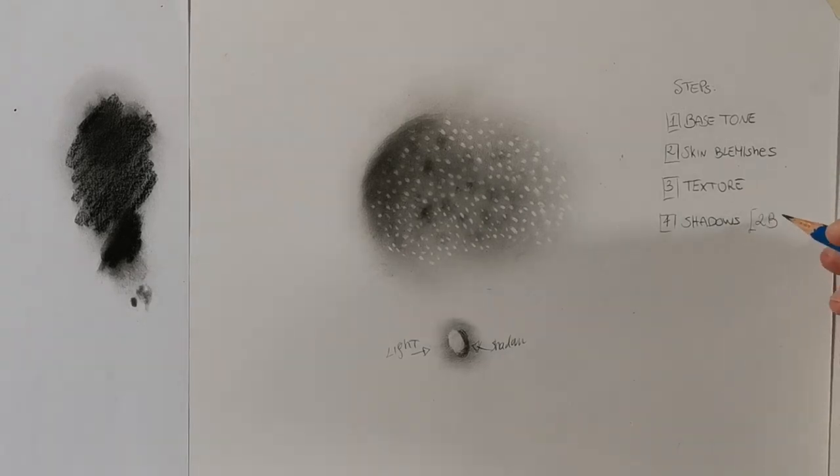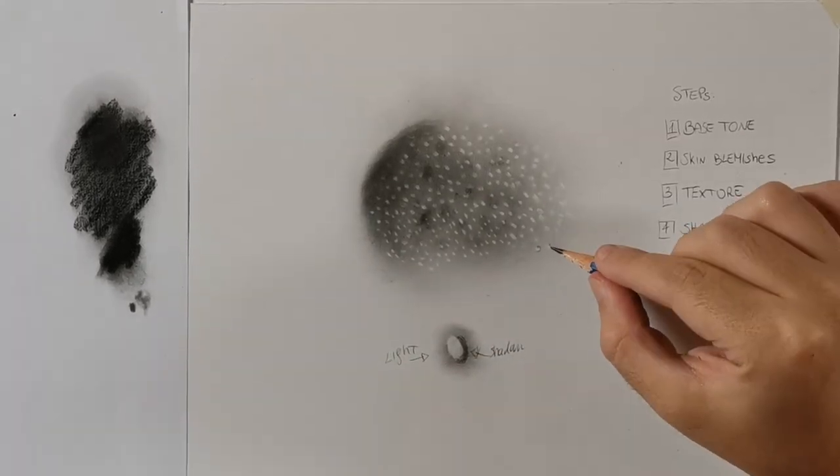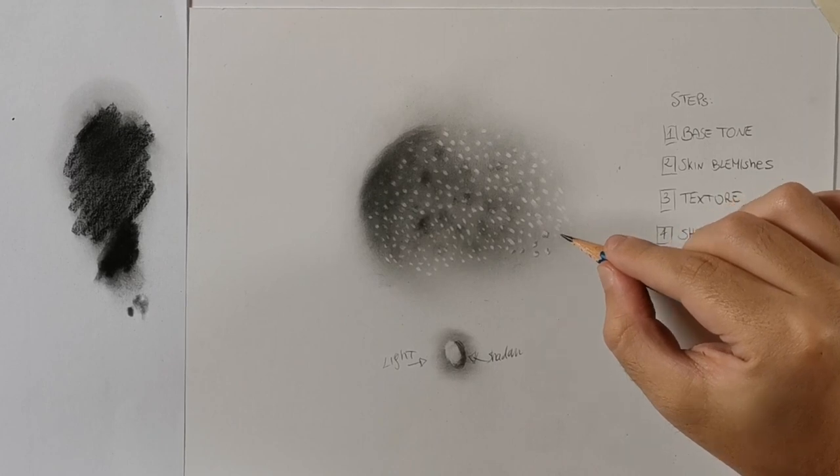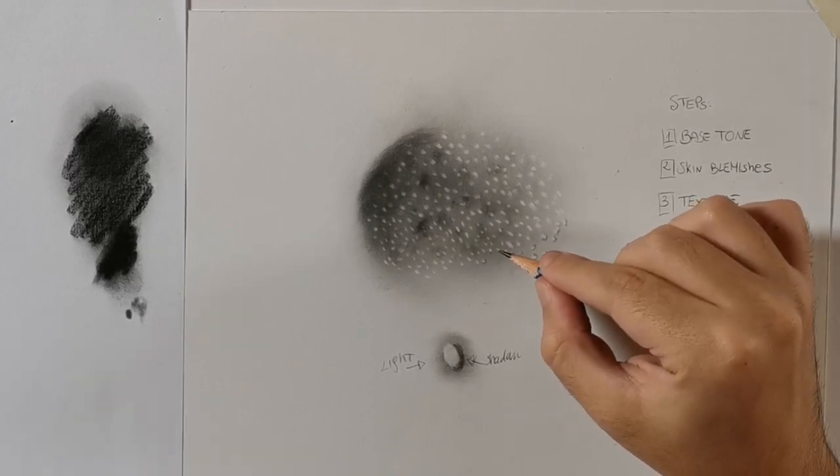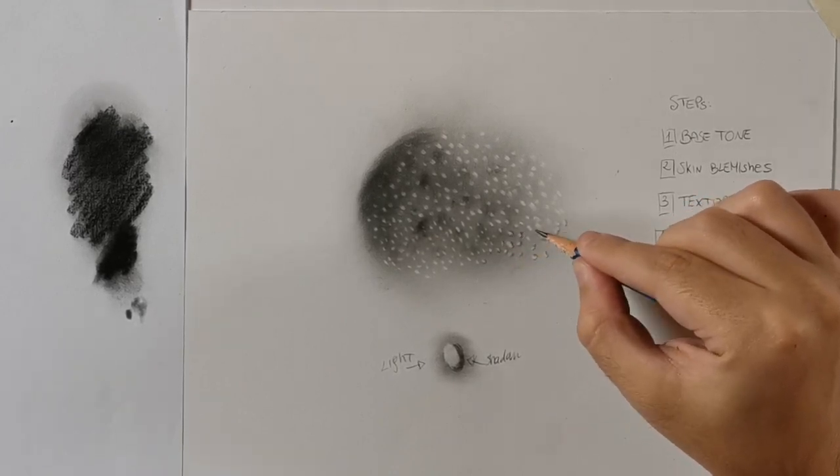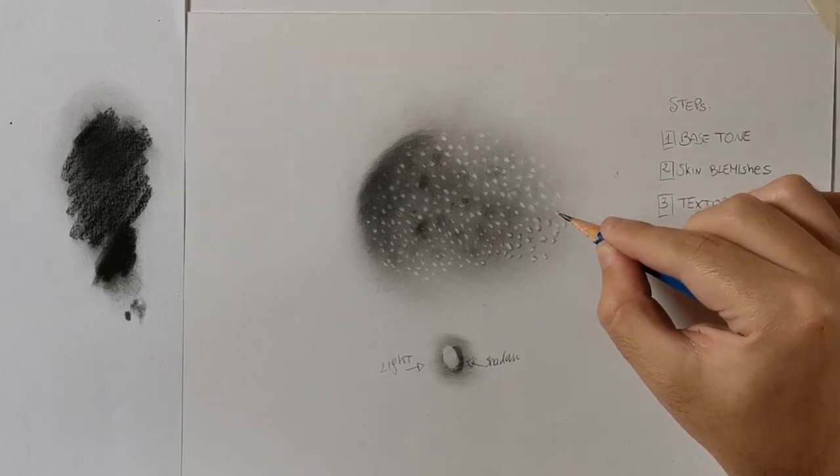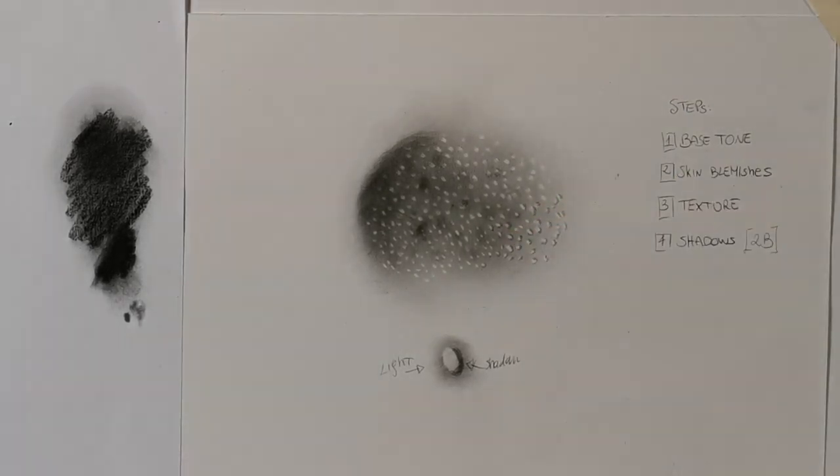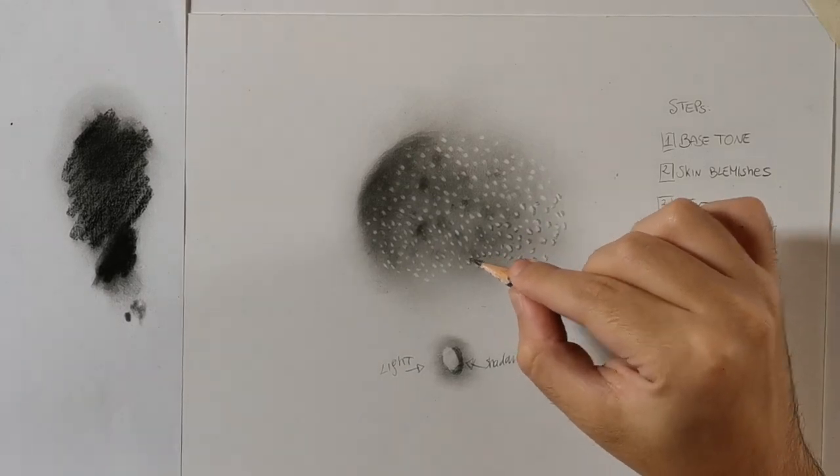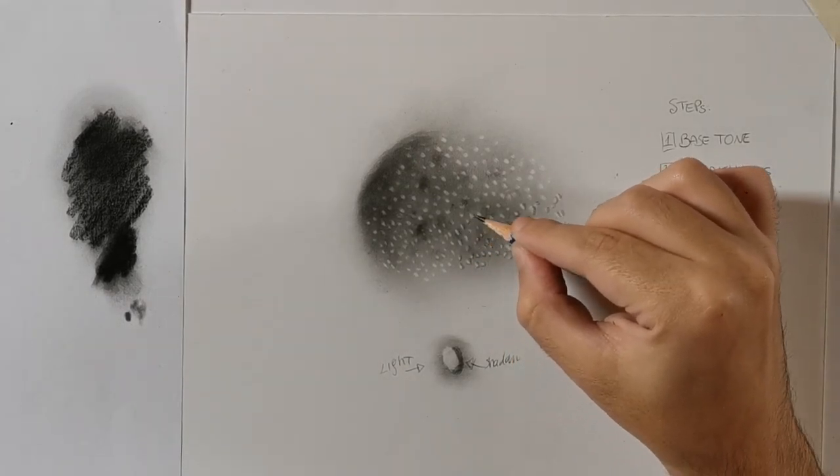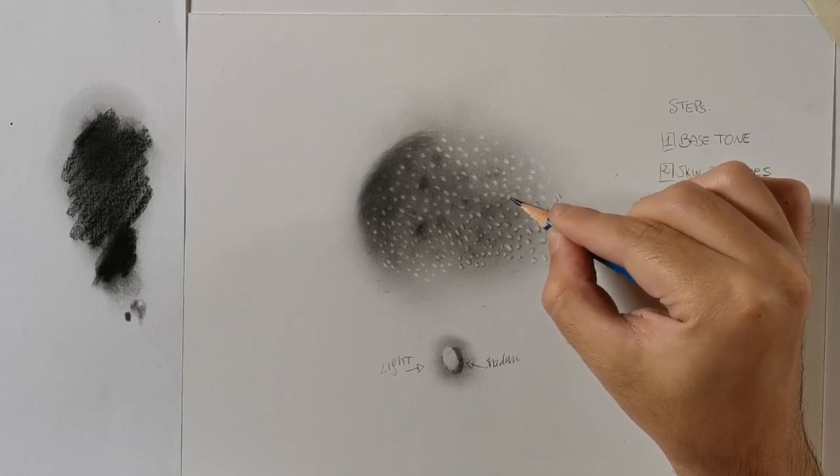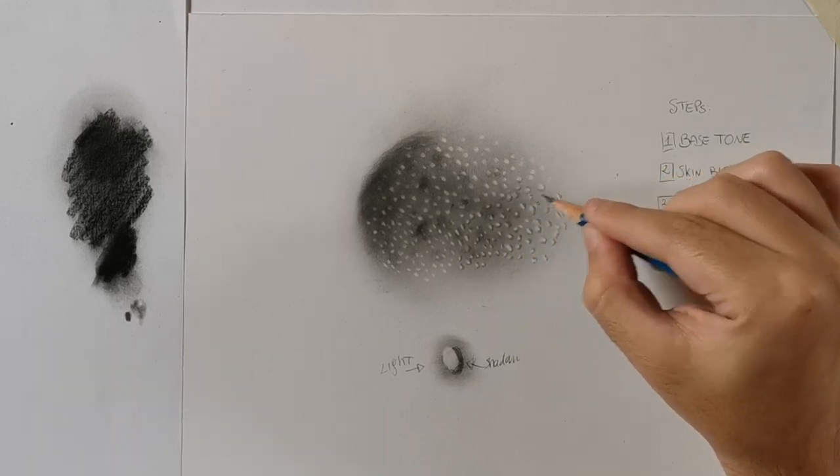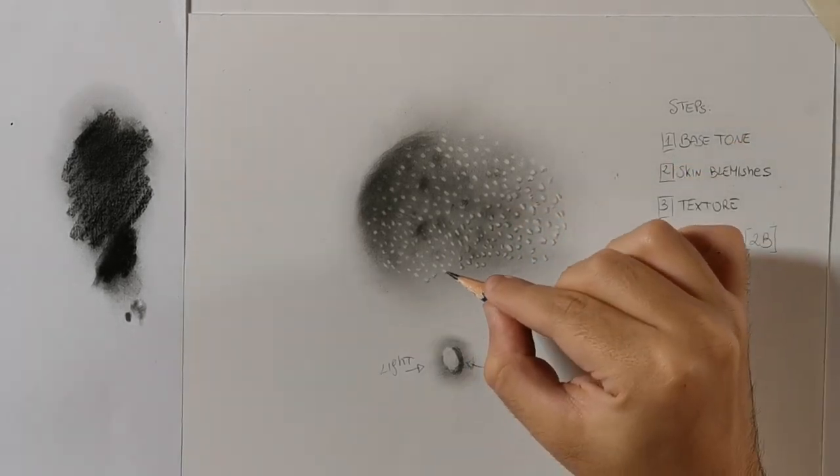Now if I zoom in, you can understand what I'm going to do. Pores are basically depressions of the skin surface that is flat, and these depressions receive less light. But if the outside rim of the depression faces the light source, the rim will appear lighter than the surrounding surface. In other words, the white spots we made in step 3 are not the pores itself but just their lighter side.